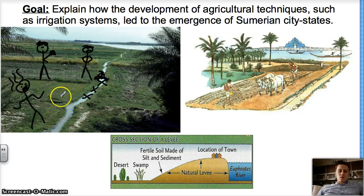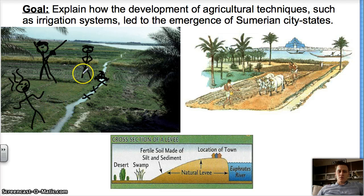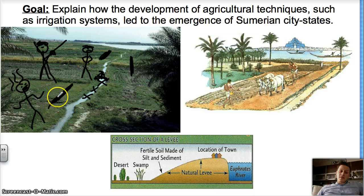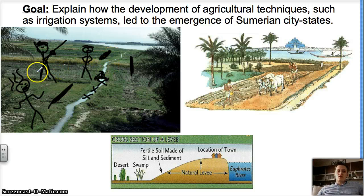Everybody agreed this was how it had to go, because without that official, the downstream person would be angry, people wouldn't do their job, and there would be conflicts. So in order to prevent conflicts between people who lived next to each other and depended on the same irrigation system, they trusted somebody to run it. That's the government. That's the first city-state.